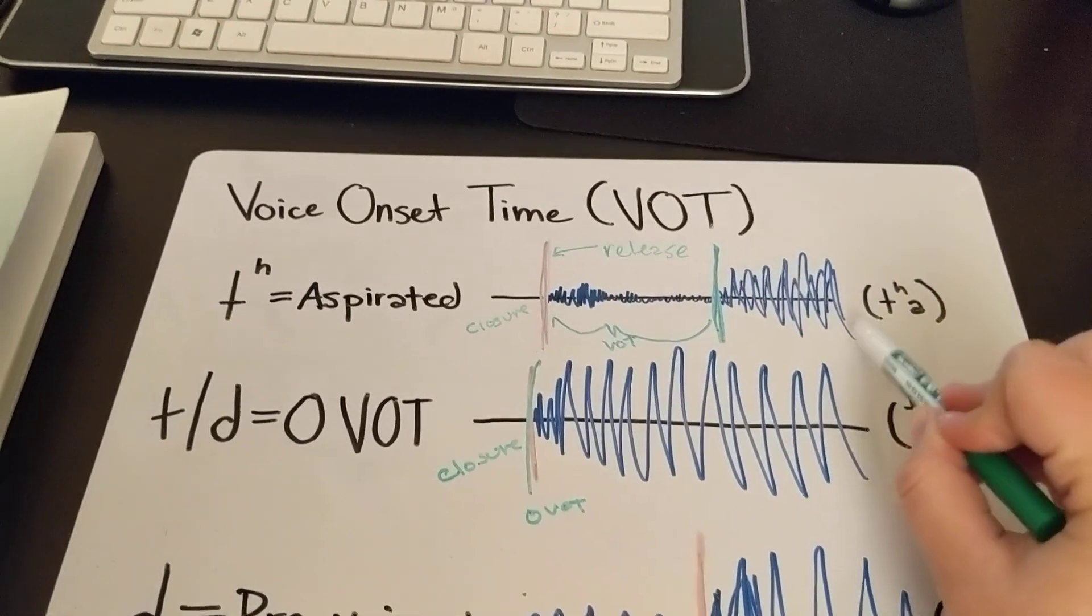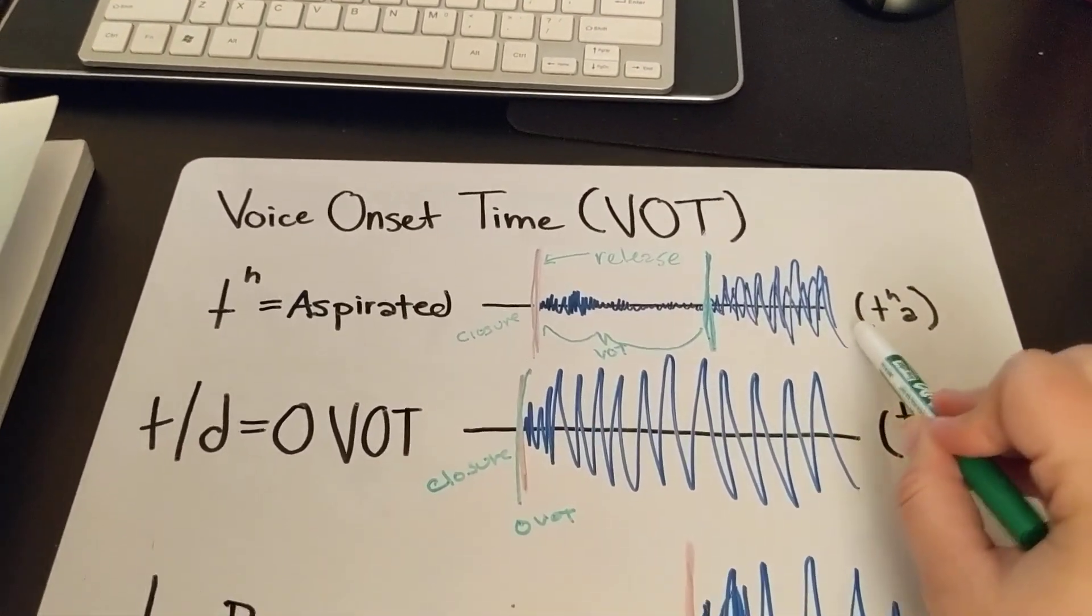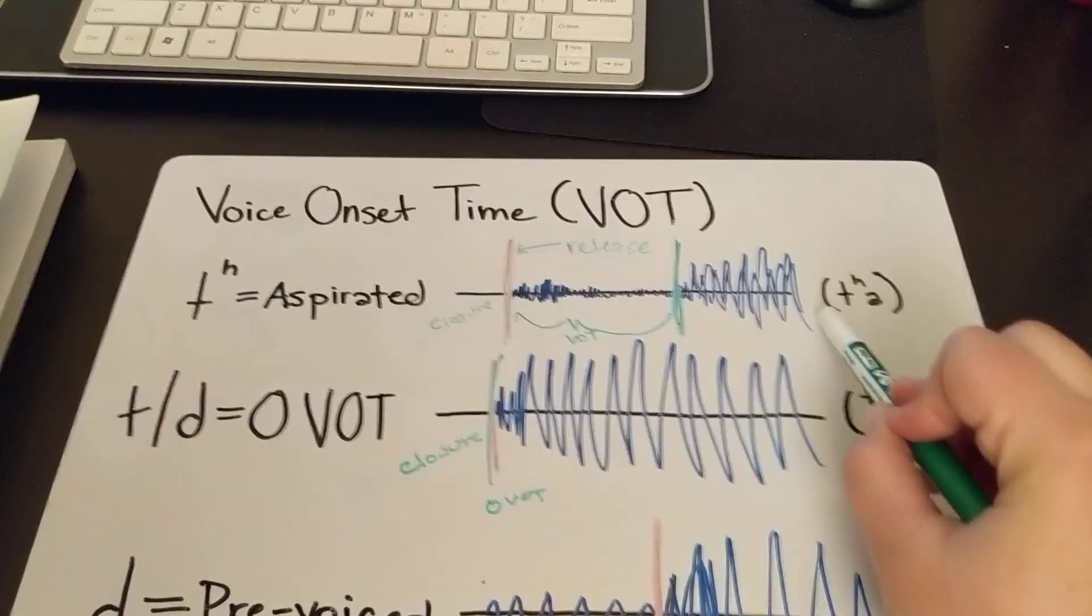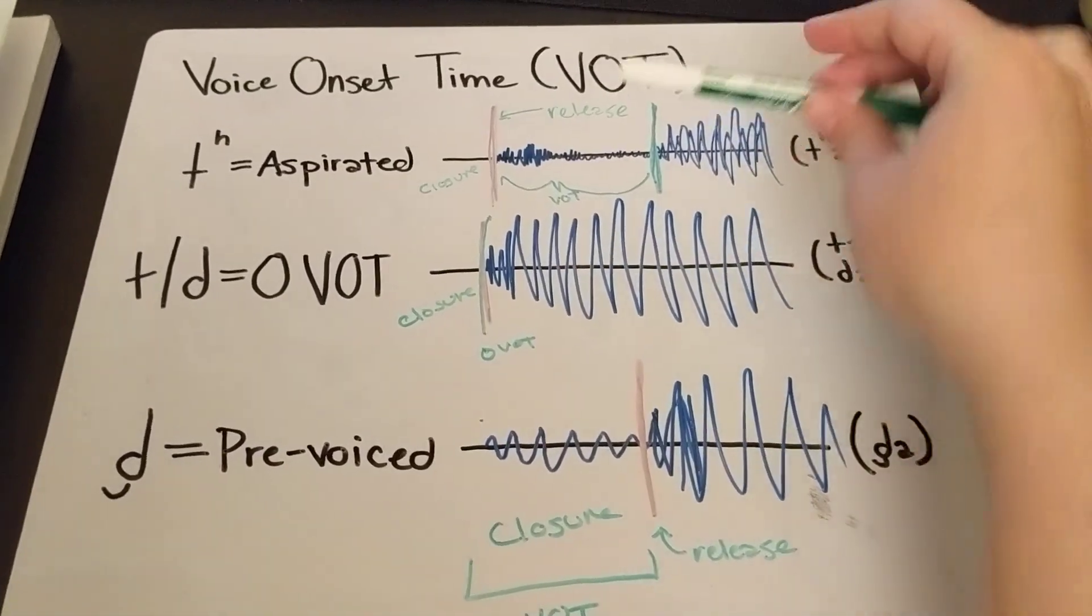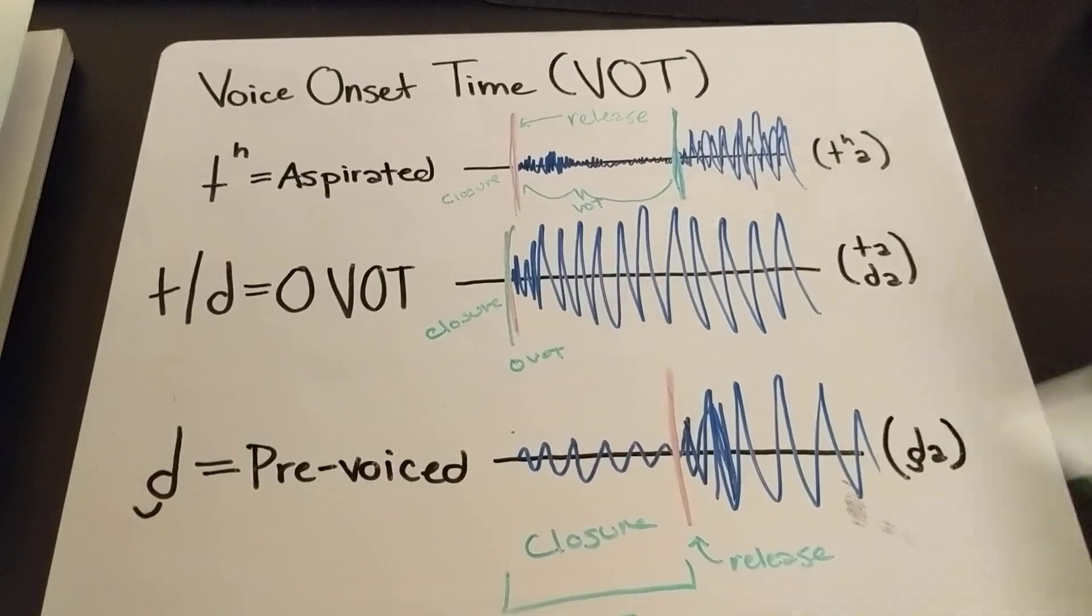whereas a native English speaker has a voice onset time closer to this. And it's very hard to relearn that, and so that's why you have those differences. So this is an interesting thing to measure if you're trying to compare different languages.